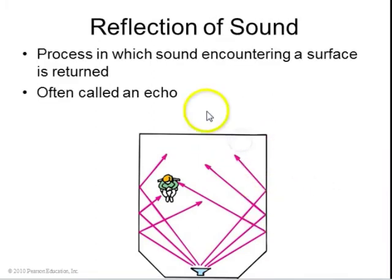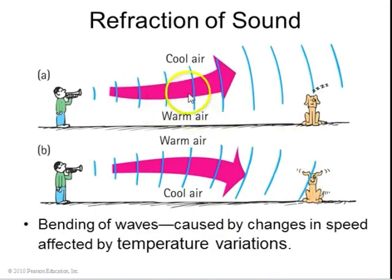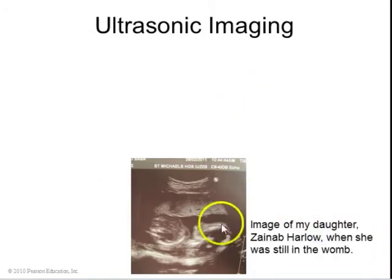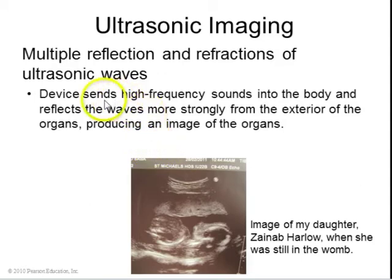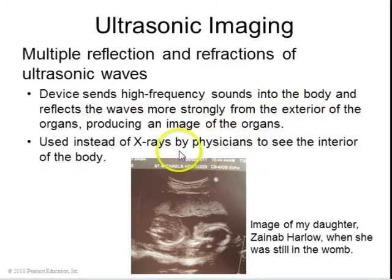Sound can be reflected off of walls. It's called echoes or reverberations. Sound can also be refracted. If you have warm air below and cool air above, the sound will travel faster through the warm air and can actually bend the waves upwards. If it's reversed, it can bend the waves downwards. Reflections and refractions will happen inside solid and liquids like inside your body. There's something called ultrasonic imaging, which is when a device sends high frequency sounds into the body and records the reflected waves that are produced from organs and other bones and things inside your body. This is an alternative to using x-rays. This was sent to my wife in early 2011. We saw an image of my daughter before she was born.